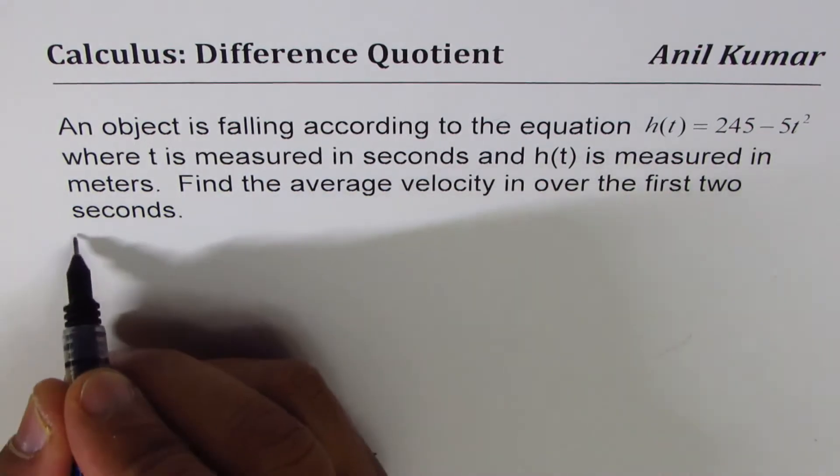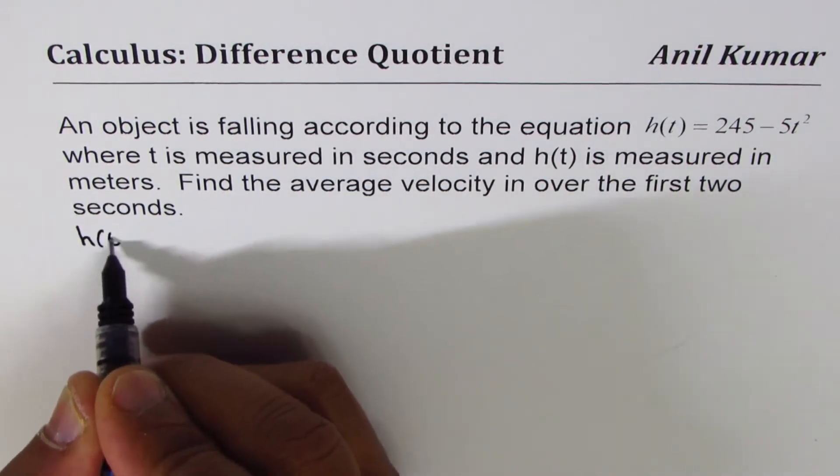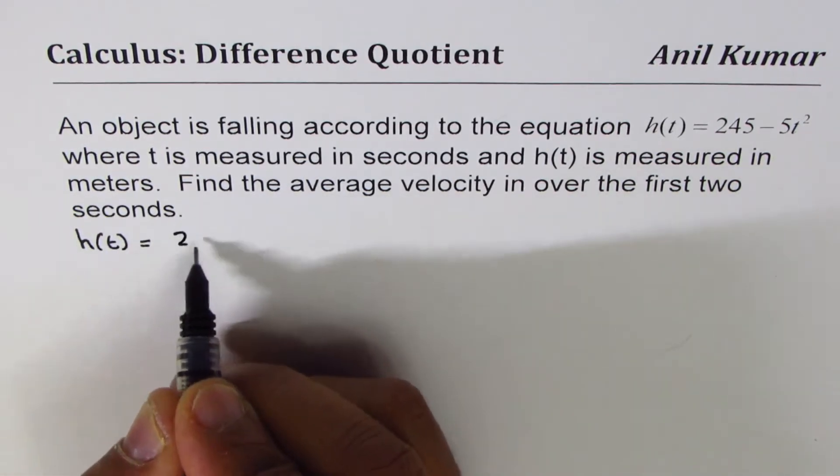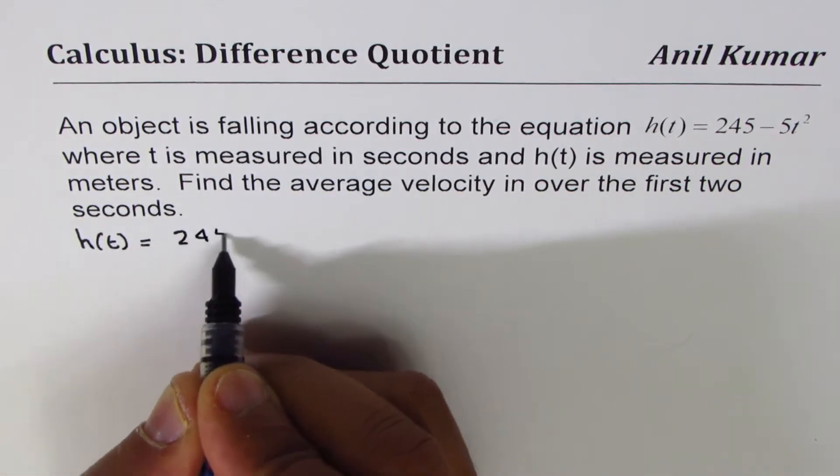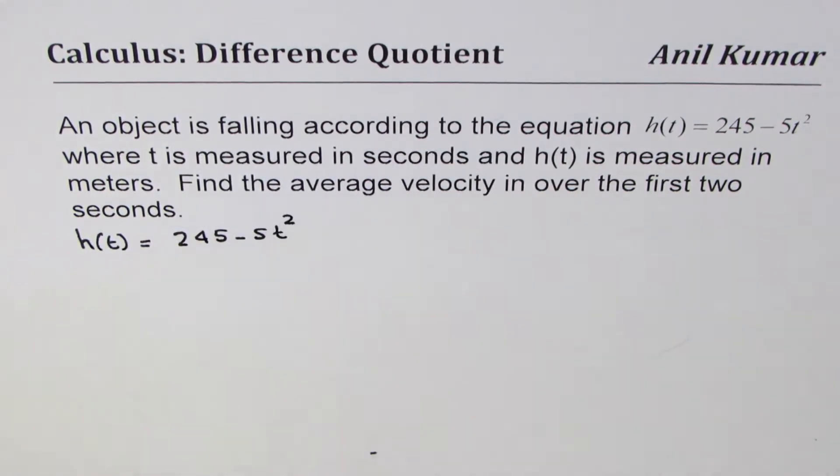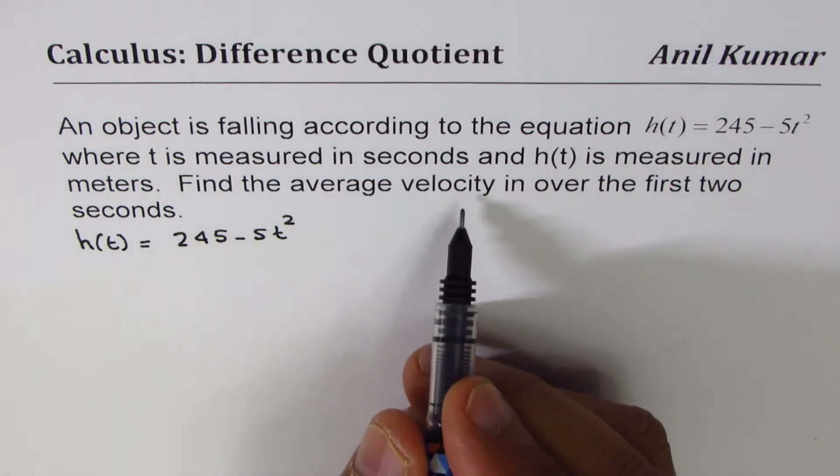Therefore, first step should be from the given expression of position, which is height in our case, h(t) = 245 - 5t². Let's find the expression for velocity.